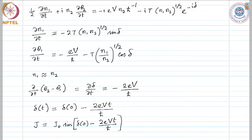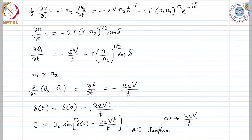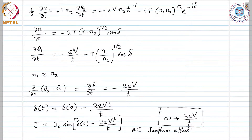The superconducting current for this phase can be written as j = j₀·sin(δ₀ − 2eVt/ℏ), which is oscillatory in time. The angular frequency ω is given as 2eV/ℏ. This is the AC Josephson Effect: by applying a DC voltage we obtain an oscillation of the current with this frequency. A DC voltage of 1 microvolt produces a frequency of 483.6 MHz.